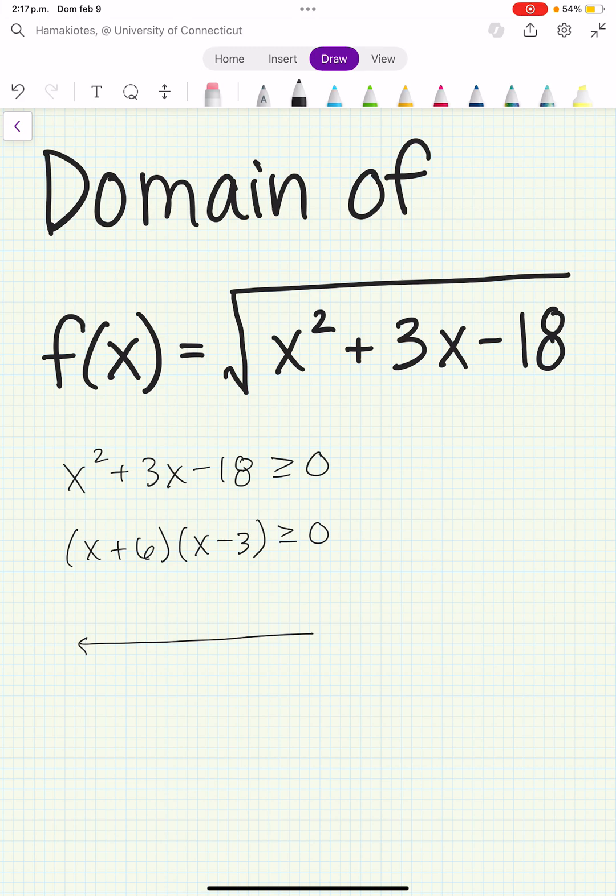Now, we can mark these down on the number line. So this tells us that x plus 6 equals 0, so x equals minus 6. And this tells us that x minus 3 equals 0, so x equals 3.